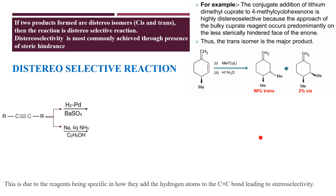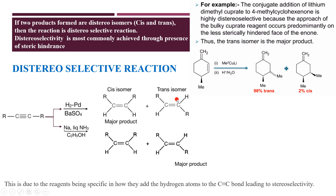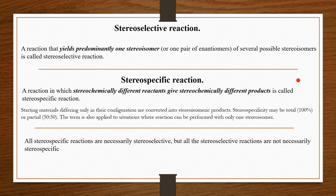Similarly, we have diastereoselective reactions. Out of the many diastereomers available, one is formed selectively as a major compound. For example, for an alkyne, if you carry out hydrogenation or reduction, the cis isomer is the major product when you use hydrogen with palladium-barium sulfate, that is Lindlar's catalyst. And when you use sodium in liquid ammonia, you get trans as a major product. This is called diastereoselectivity. Another example shows 98% of trans is formed and 2% of cis is formed. So all these are nothing but selective and stereospecific reactions.